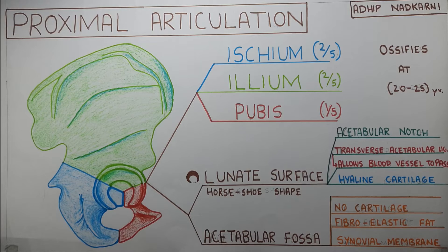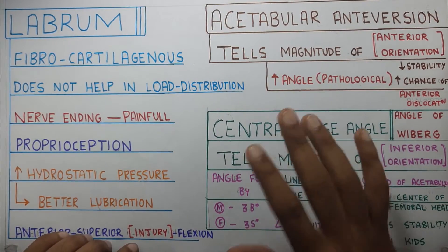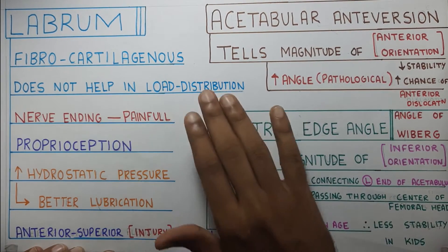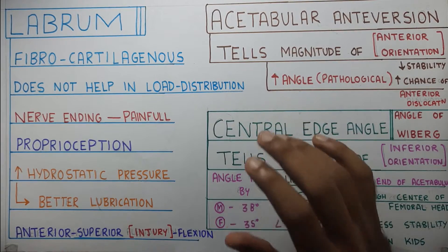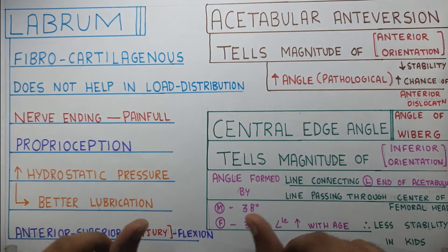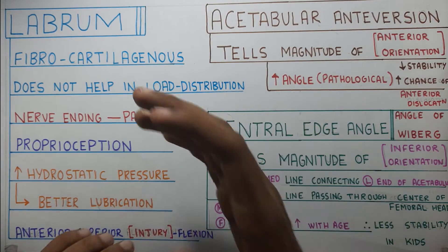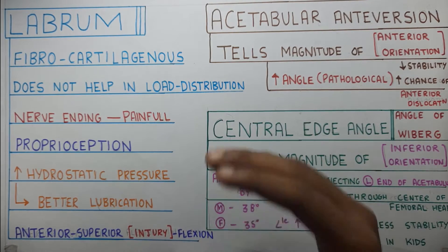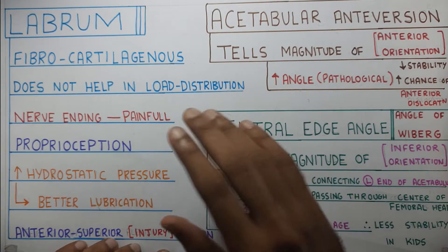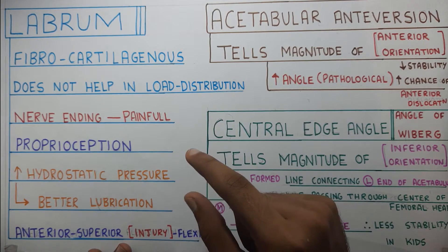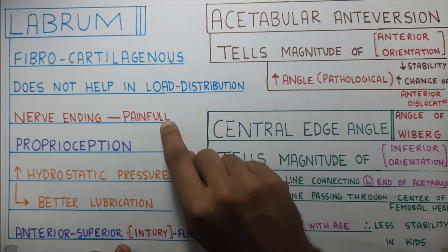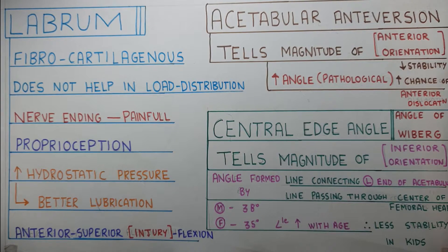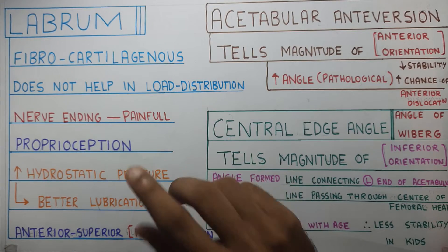Now talking about the labrum: it is fibrocartilaginous in structure. It does not have a load distribution function — that is a very important point. We often think the labrum increases surface area and therefore improves load distribution, but that is not the case. It was seen that even when the labrum was removed, it did not affect load distribution much. The labrum has a lot of nerve endings, so if there is any damage to it, it is painful. If a patient complains of pain in the hip joint, labrum should come to mind.